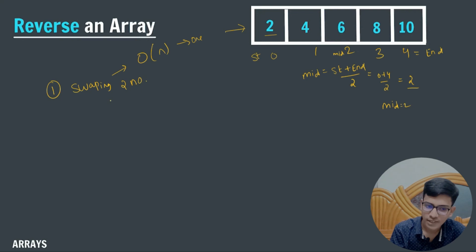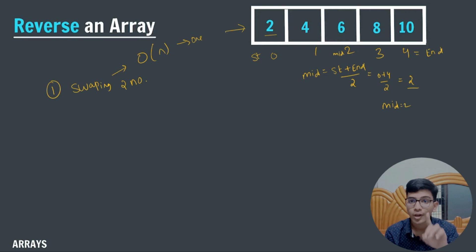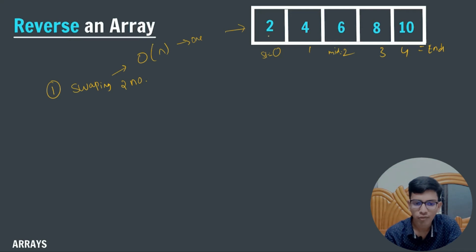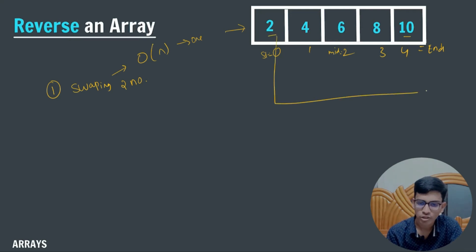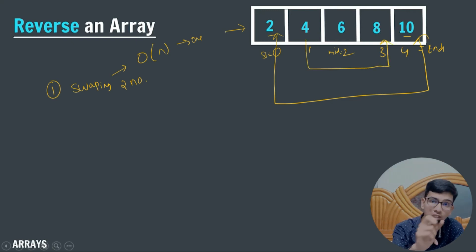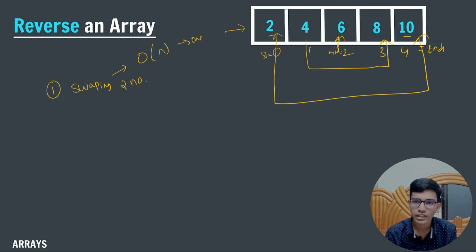We already learned about swapping two numbers using a temporary variable. Using that same concept, we are going to solve this reversing array question. The logic is: I am going to change the values of the first element with the last element — basically swapping the first element with the last, then the second element with the second-last element. By just swapping the values we can simply reverse the array. The mid element doesn't need to be swapped.